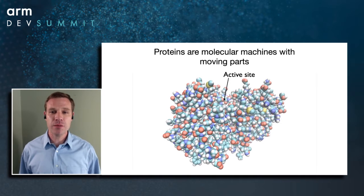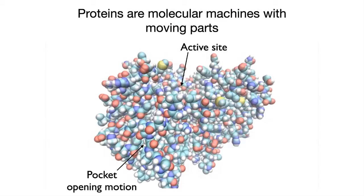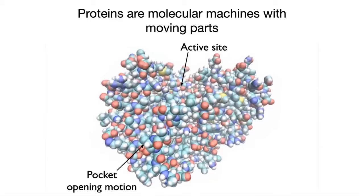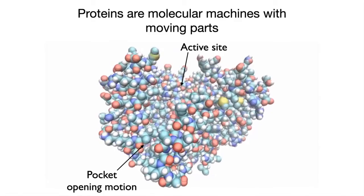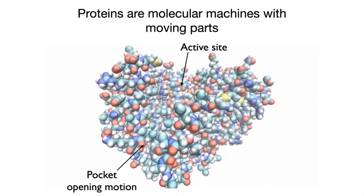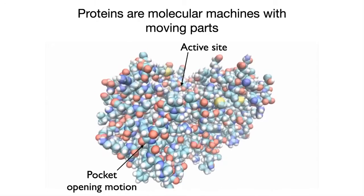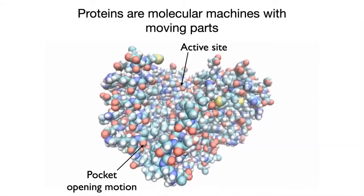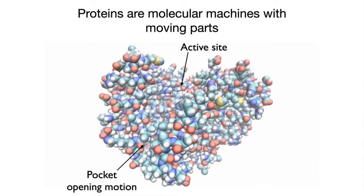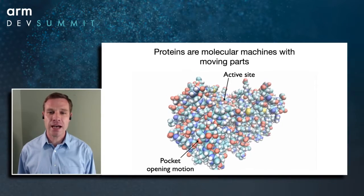Those of us in the computational community have worked for a long time on methods for using computers to simulate how these moving parts work. Here I'm showing a snippet of one of these calculations where all of the atoms in the protein are moving. Down in the lower left I've highlighted a region where, beyond just wiggling about, these atoms actually open up and create a binding pocket similar in size to the active site — one we could potentially target with small molecule drugs. We had no knowledge of this site before running these simulations, given only the static snapshot on the first slide.